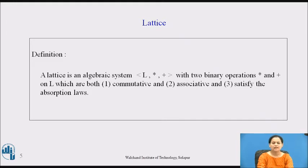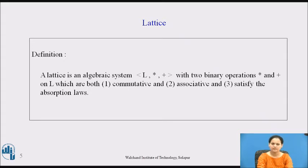Here is the definition for Lattice as an algebraic system. A Lattice is an algebraic system (L, *, +) with two binary operations, * and +, on L, which are both: first, commutative; second, associative; and third, satisfy the absorption laws.